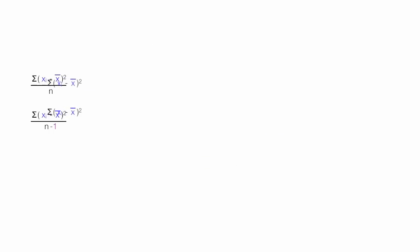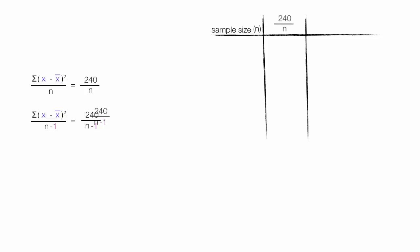Now imagine I take the numerator of these two equations and I just say it's 240. Don't worry about how, it's just 240. And I'm going to take 240 divided by n, which is the sample size, and I'm going to take 240 divided by n-1, and I'll look at the difference and compare those results. I'm going to make a little table so I can keep track of the results. And across the top, I'm going to have 240 divided by n, and also 240 divided by n-1.